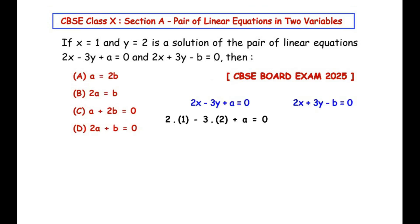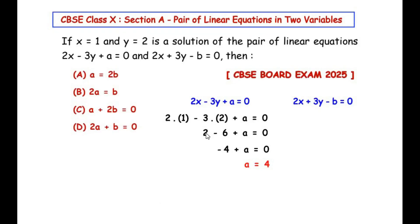These are the two given equations. Now in the first equation we have considered the value of x as 1 and y as 2, so we get 2(1) - 3(2) + a = 0. Let us simplify this now. So 2 times 1 gives us 2 minus 3 times 2 gives us -6 plus a = 0. Now 2 - 6 gives us -4 + a = 0. Now taking -4 to the right hand side it becomes positive 4, so the value of a we got here is 4.